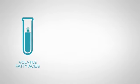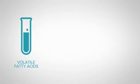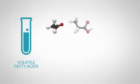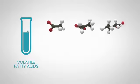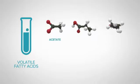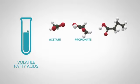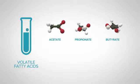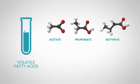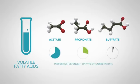There are three main volatile fatty acids produced when carbohydrates are digested, and these are acetic, propionic, and butyric acids — or more often called acetate, propionate, and butyrate. The proportion of each of these acids depends on the type of carbohydrate that the cow has eaten, and to a lesser extent, the rumen environment.